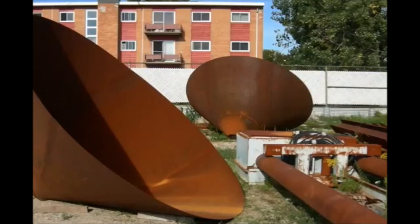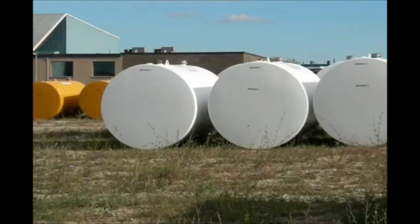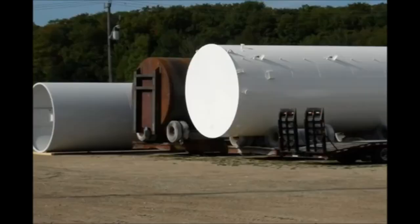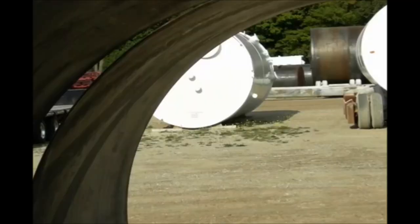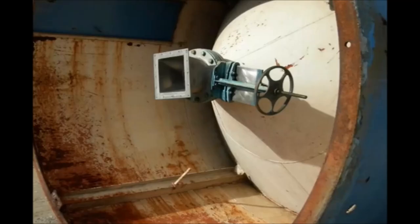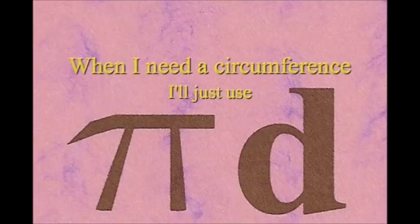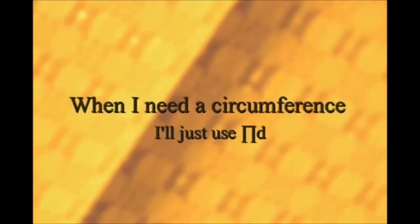It has a radius from center to rim. And its diameter's a line that goes from side to side while passing through the center, now isn't that simple. Pi r squared sounds like area to me, when I need a circumference, I'll just use pi d.